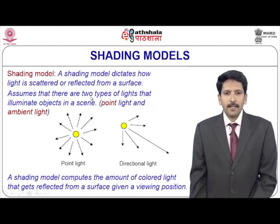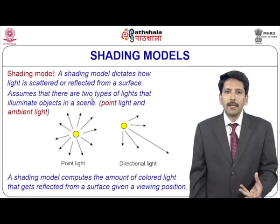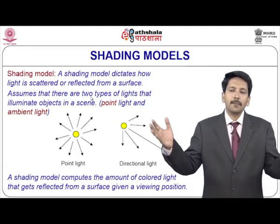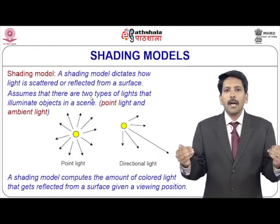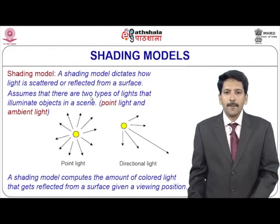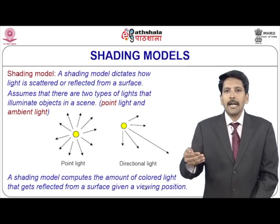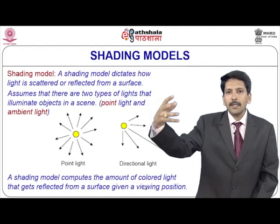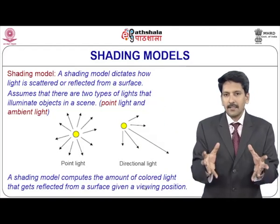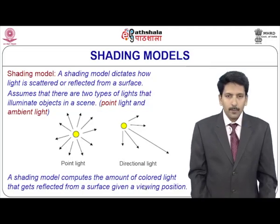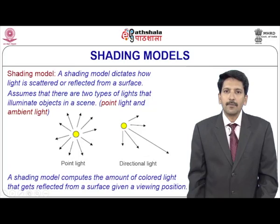For simplicity, we assume the 3D world is illuminated by lights from external sources, which can be point lights or ambient light such as daylight. The job of a shading model is to compute the amount of colored light that gets reflected from a surface given a viewing position. Given a set of lights, light properties, and material properties, we compute how much light gets reflected — what we actually see in our eye. The shading model does the big job of computing light interactions with surfaces of objects.